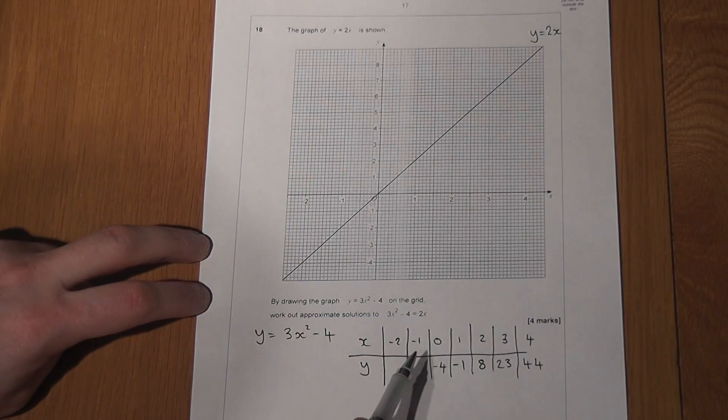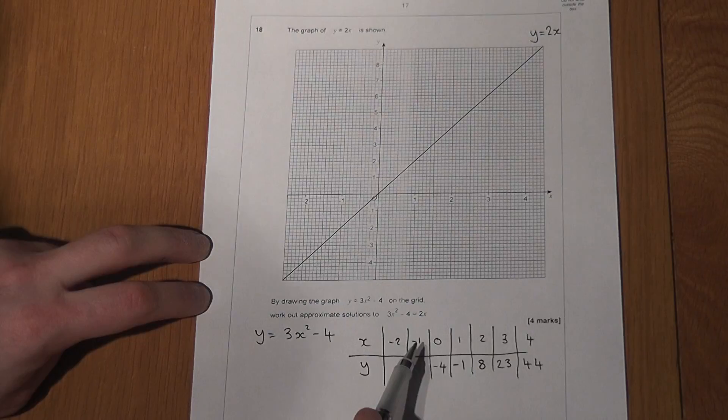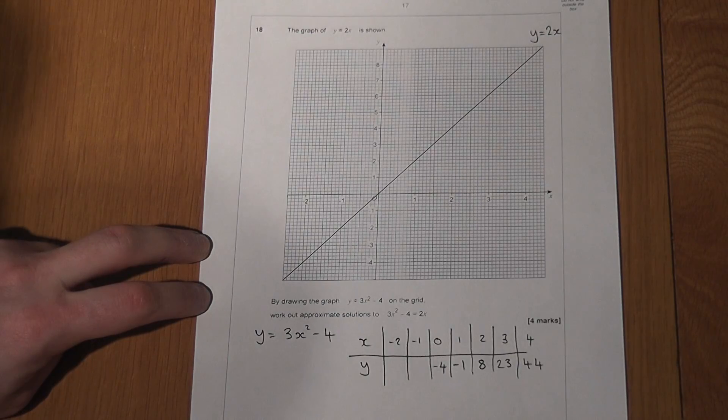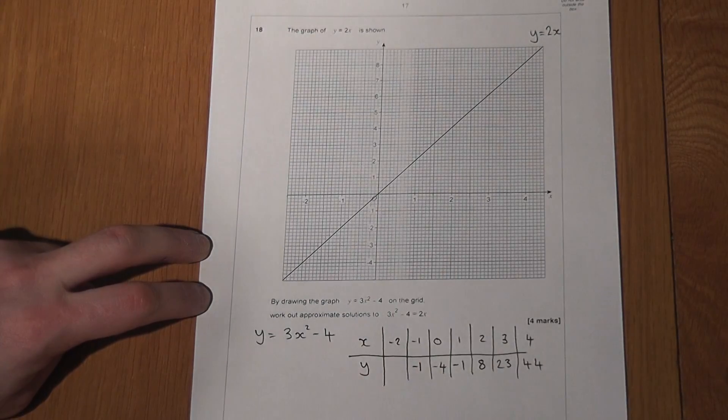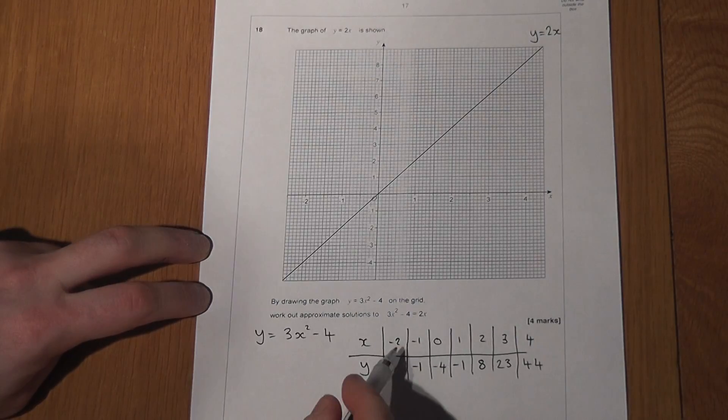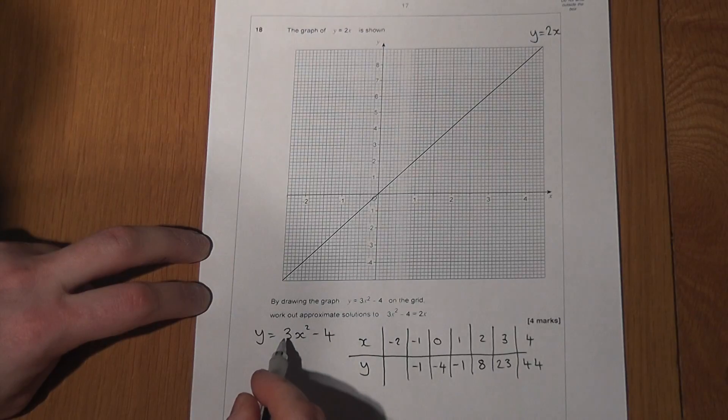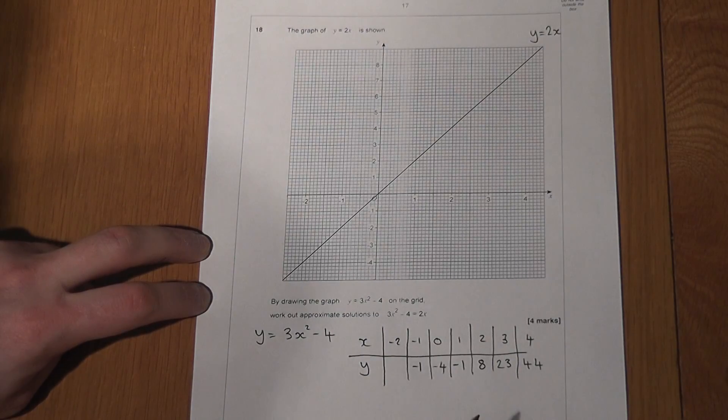Now for the negatives, I'll be really careful. Remember, a negative squared becomes positive. So negative 1 squared becomes plus 1, times 3 is 3, take away 4 goes to minus 1. And last but not least, minus 2 squared is plus 4, times 3 is 12, take away 4 is 8.